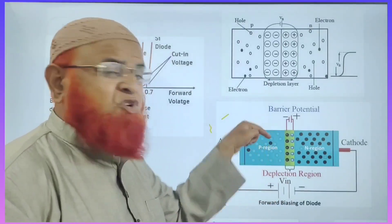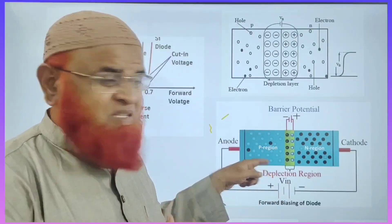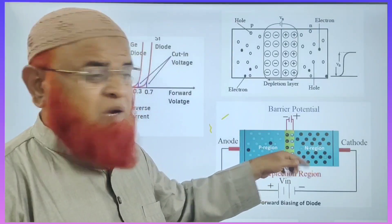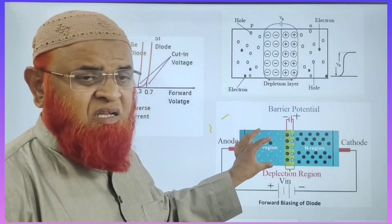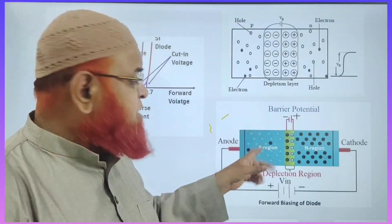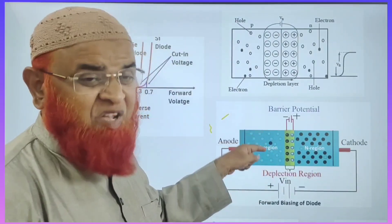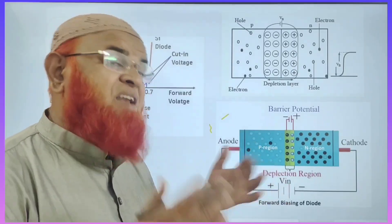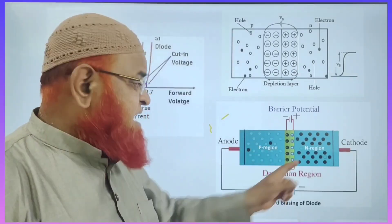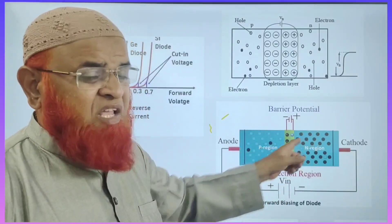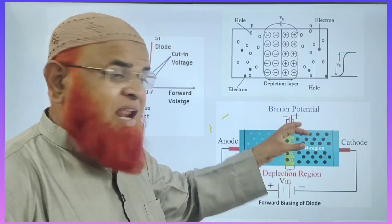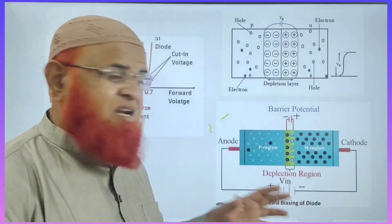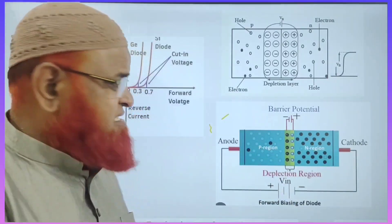In positive type, holes are present. In negative type, electrons are present. Here, this is holes — the block diagram in which holes are majority carriers. And black colored dots are minority carriers. In the n-region (negative region), electrons are majority carriers and holes are minority carriers.